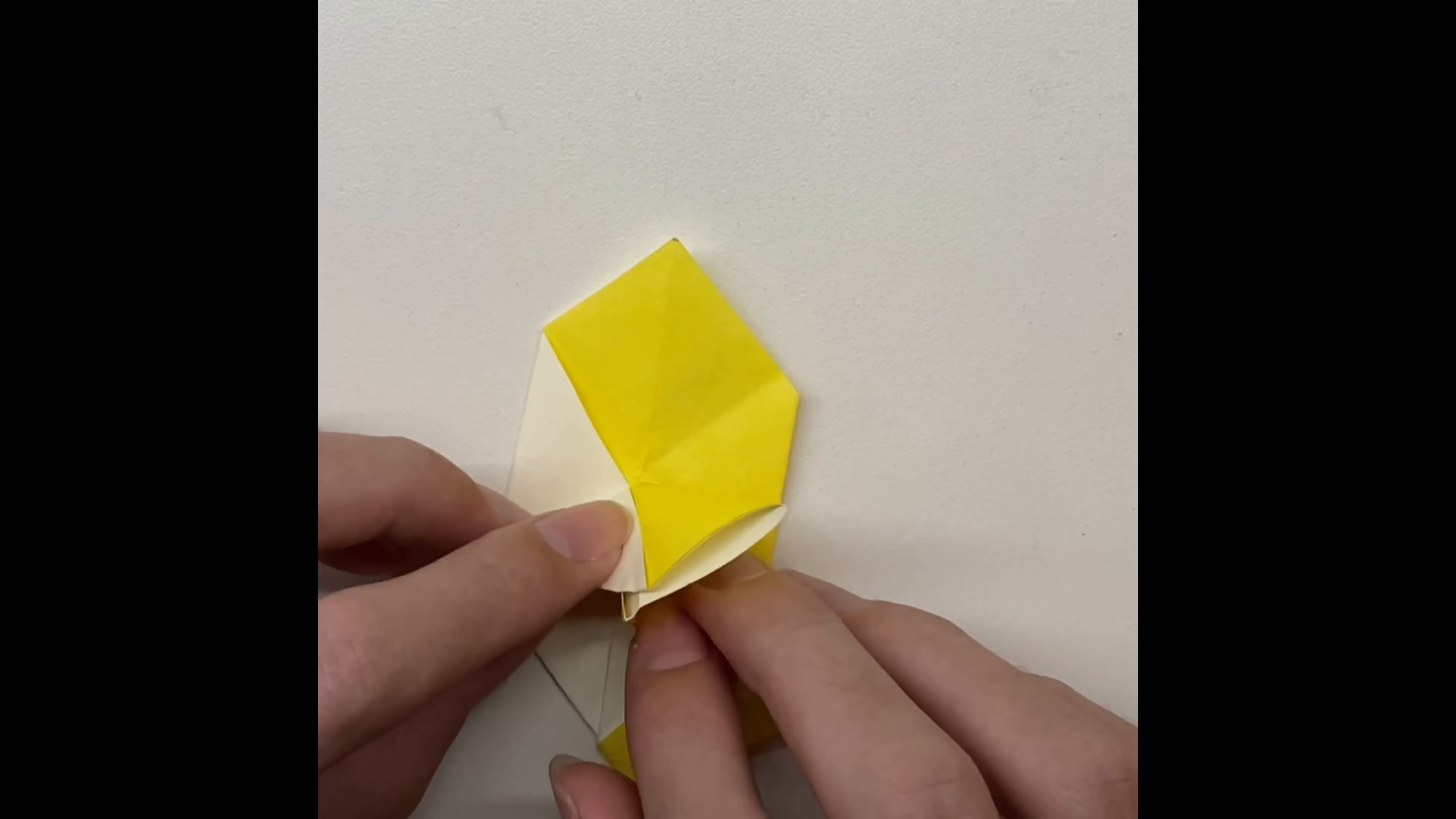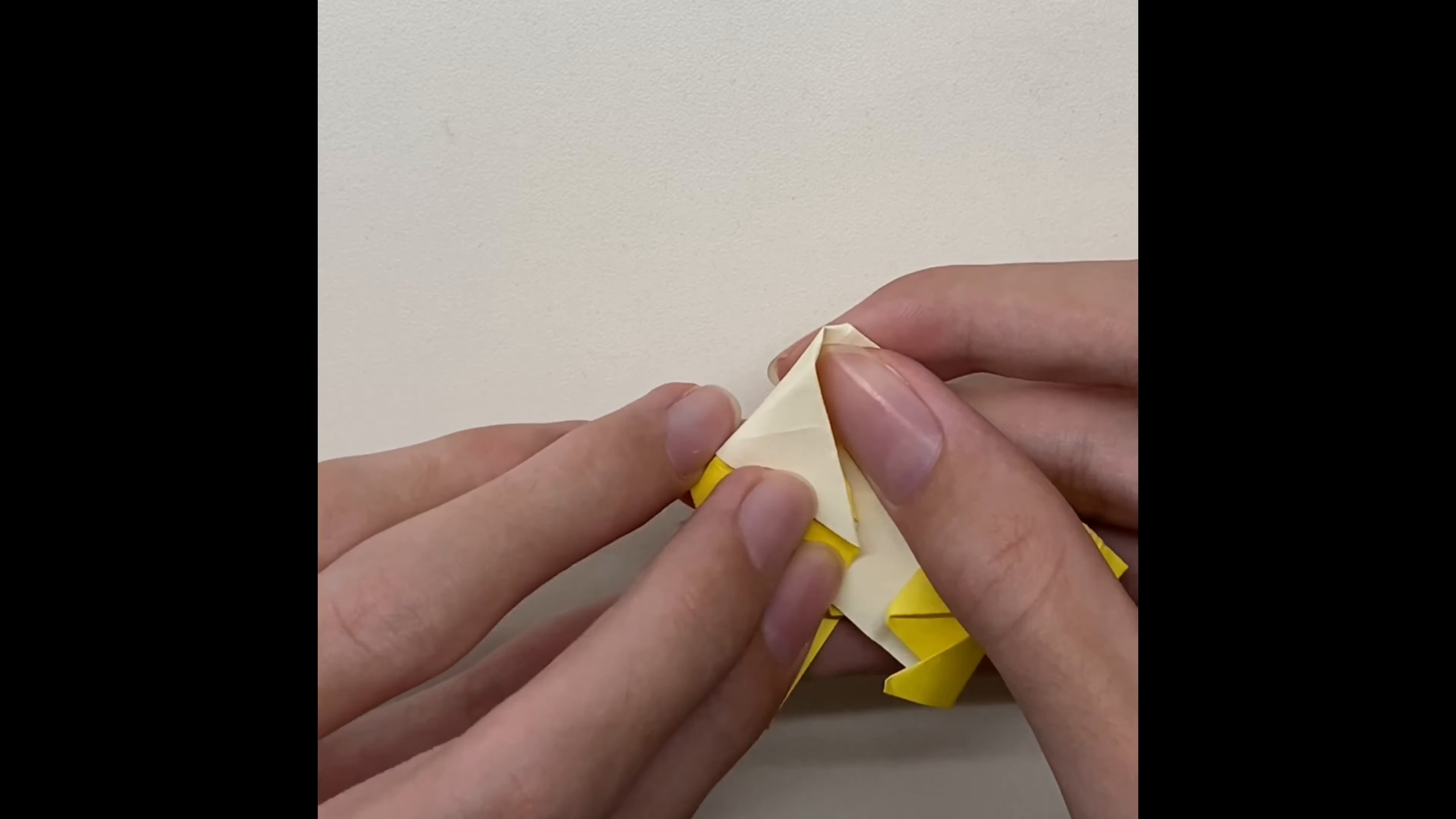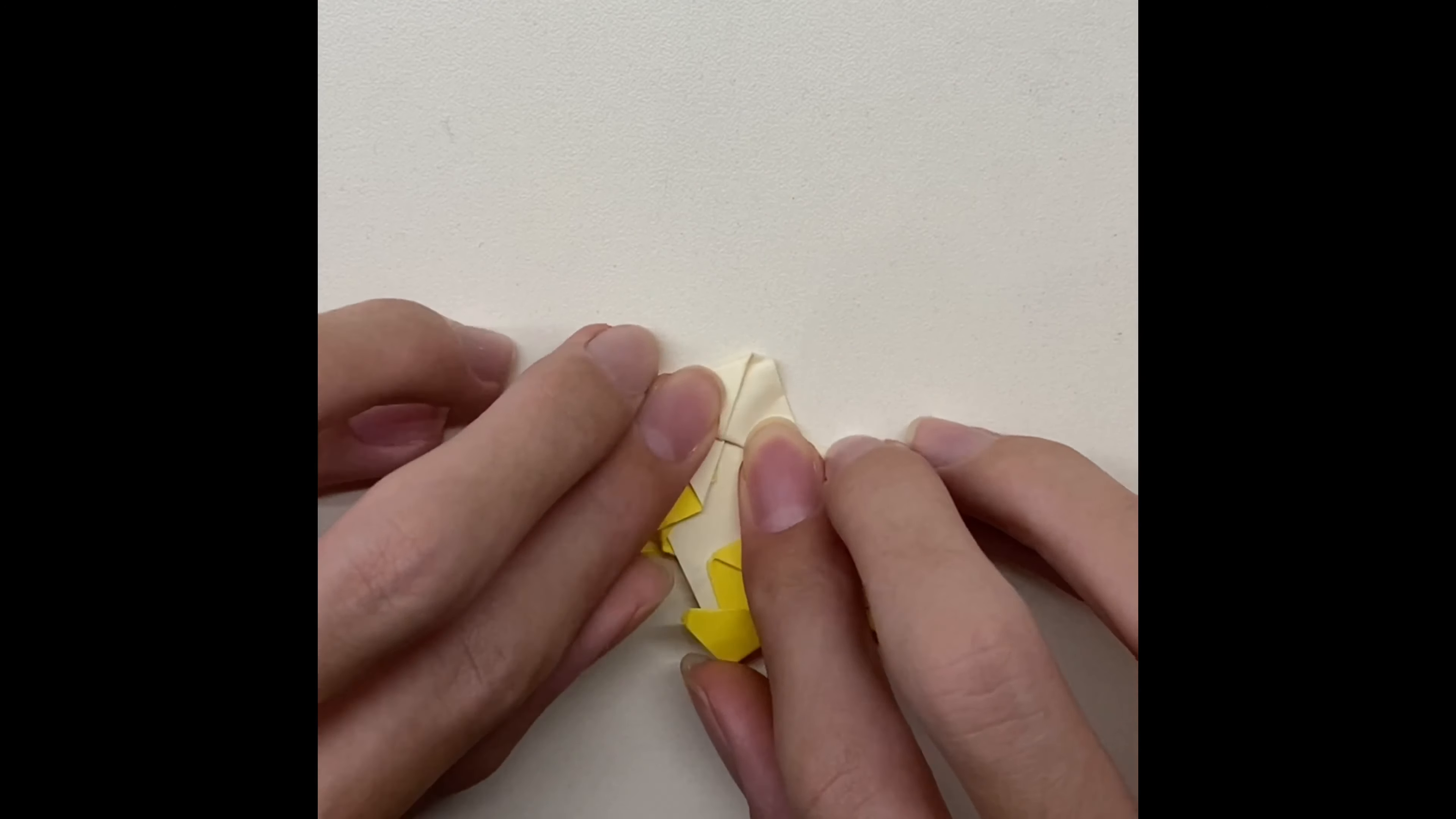After that, fold the triangle twice from both sides, then push it inside the origami.